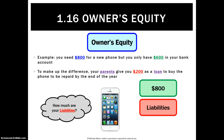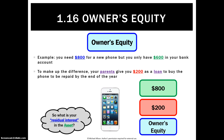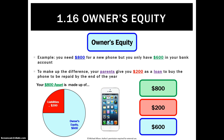However, $200 of that has come from outside sources. You have an obligation to pay your parents $200. The residual or leftover part is your owner's equity — that's called your residual interest. So your actual part of the asset that you own is $600.